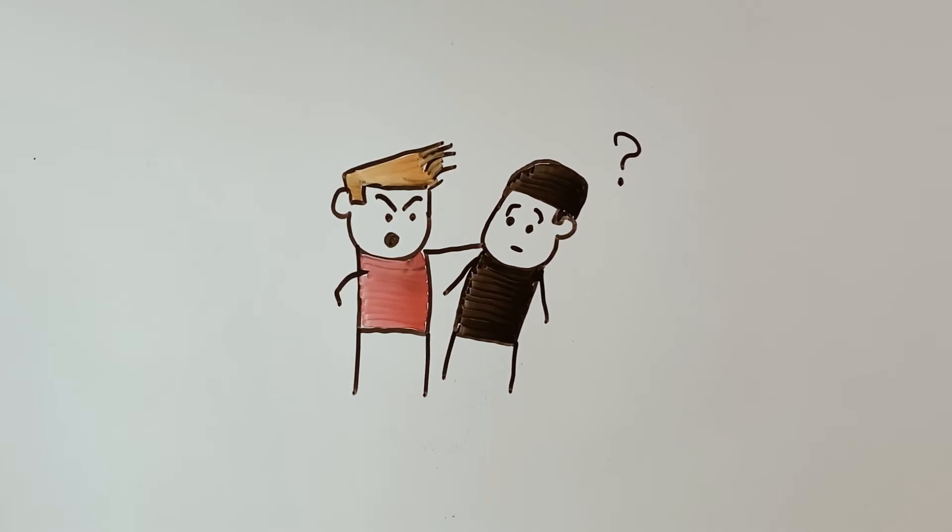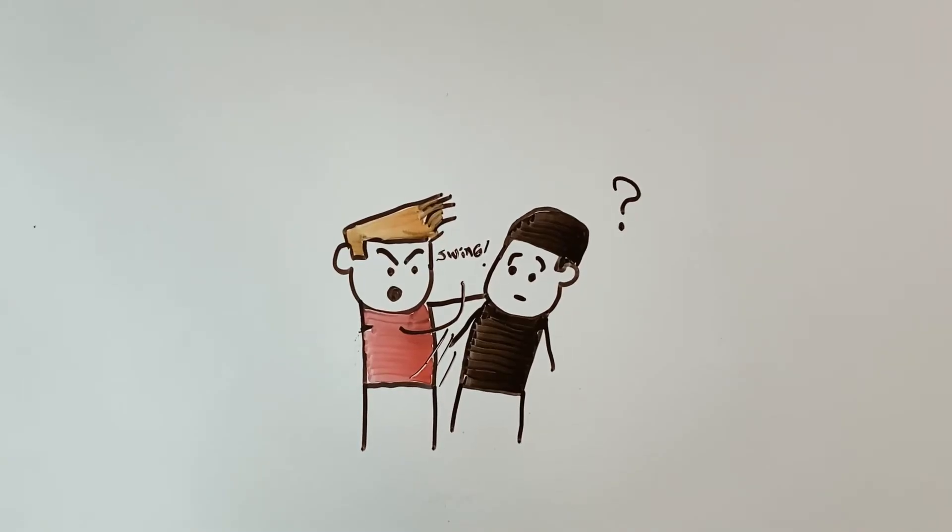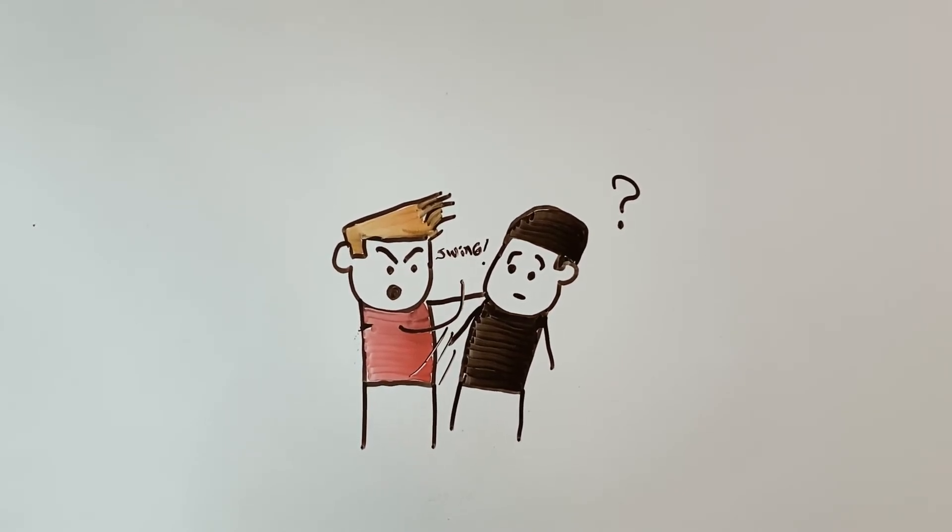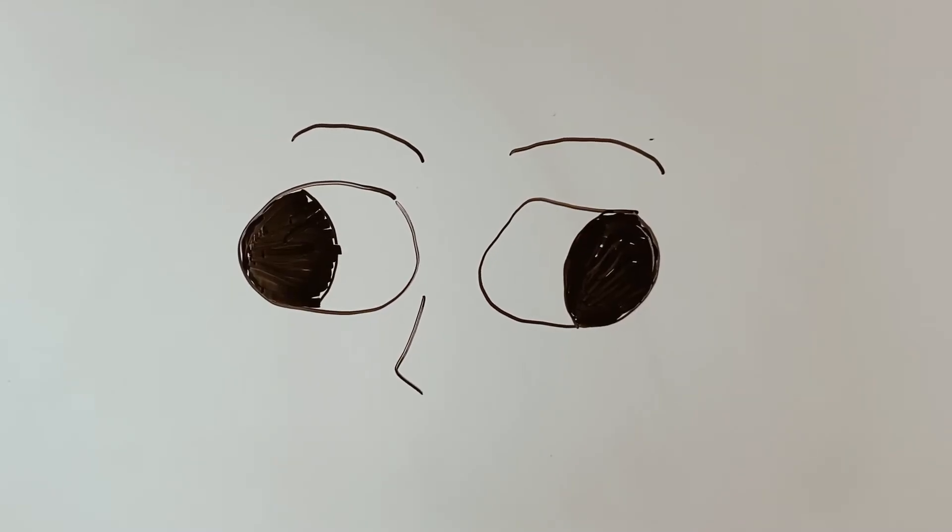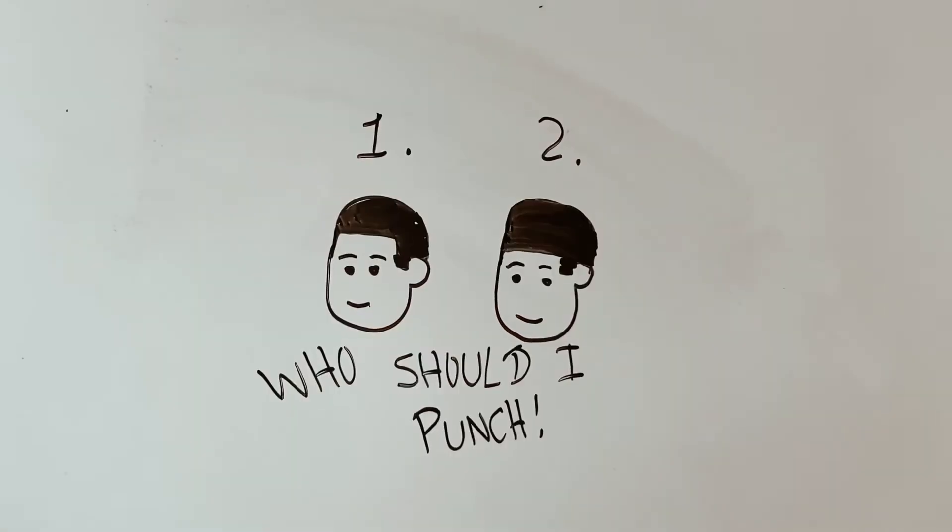So Kyle swings but misses. Like, how you gonna miss a punch when the guy's only a few inches in front of you? But at the same time, Kyle is crossfaded, so maybe he saw two Franks and didn't know which one to punch.